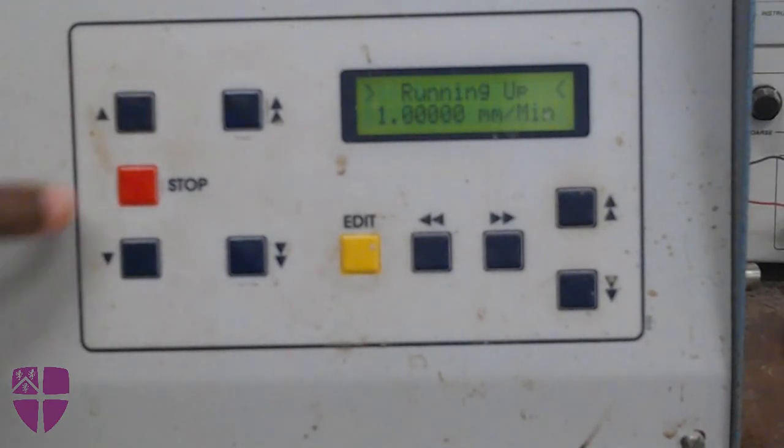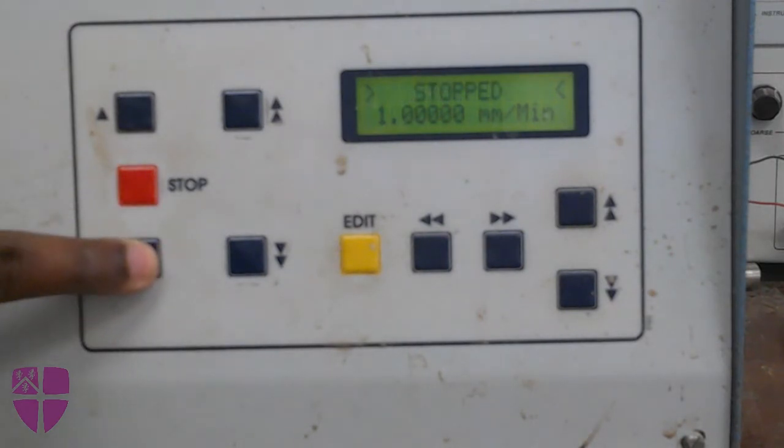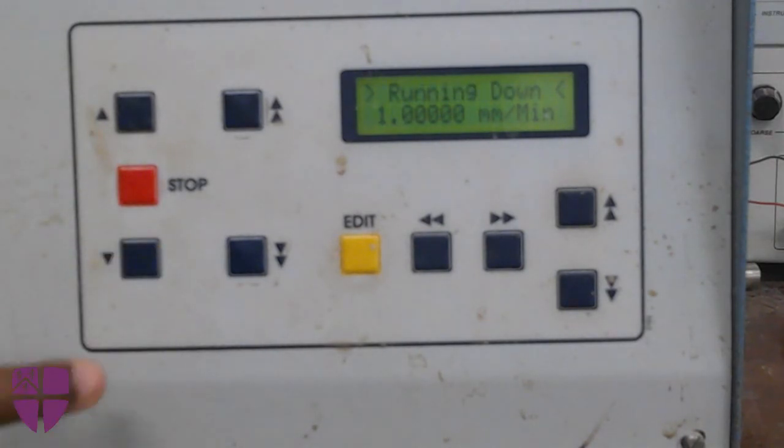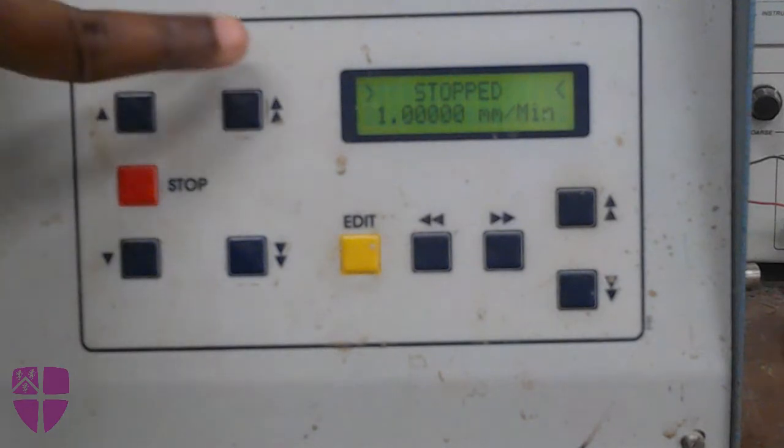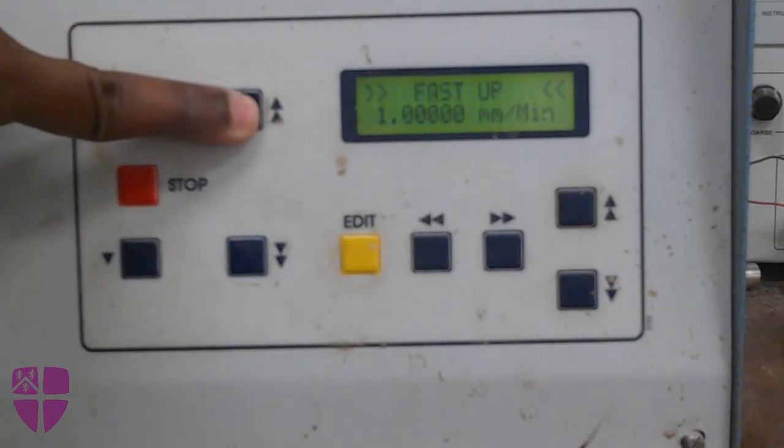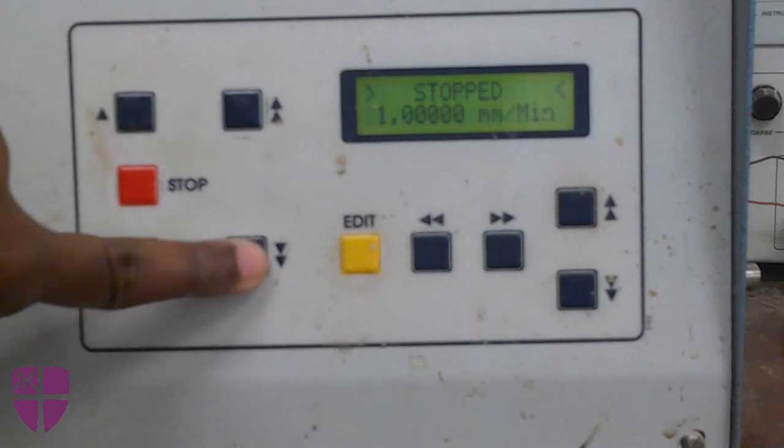The movement of the triaxial rig can be controlled using the buttons available. Just press once for upward or downward movement. For fast upward or downward movement, you need to press and hold. Edit the test strain rate to 1 mm per minute.